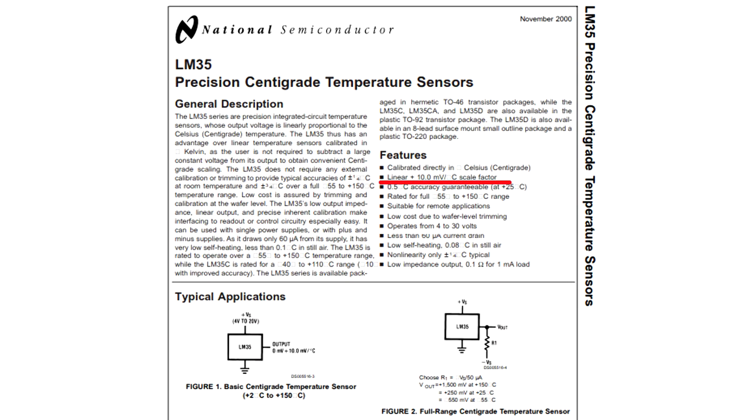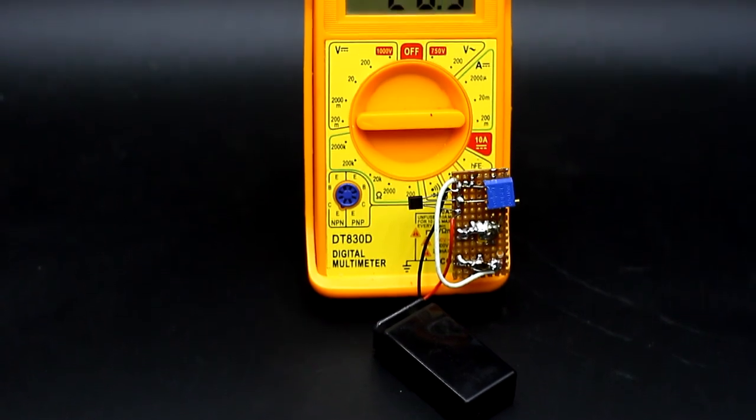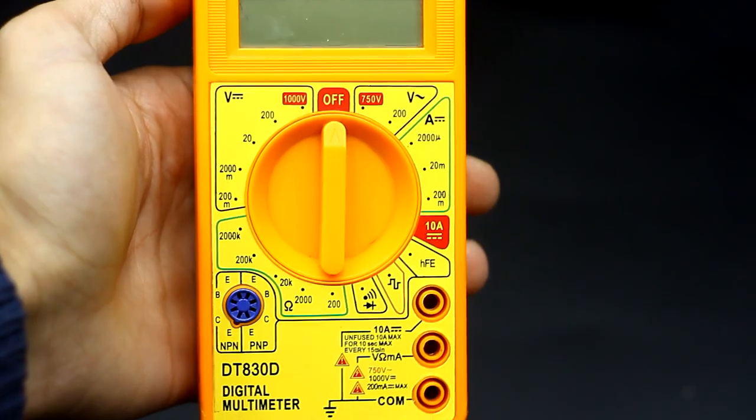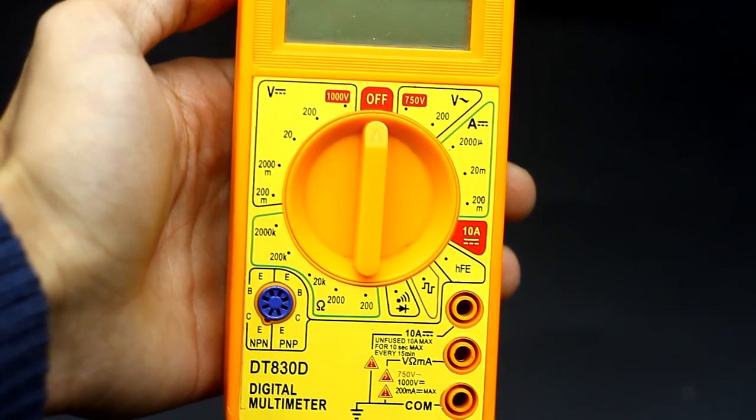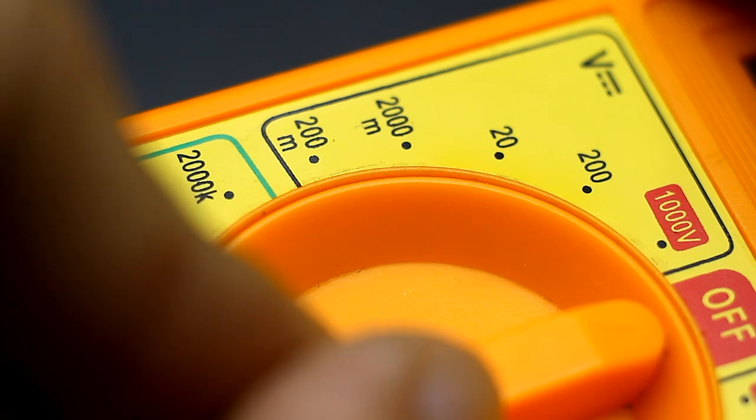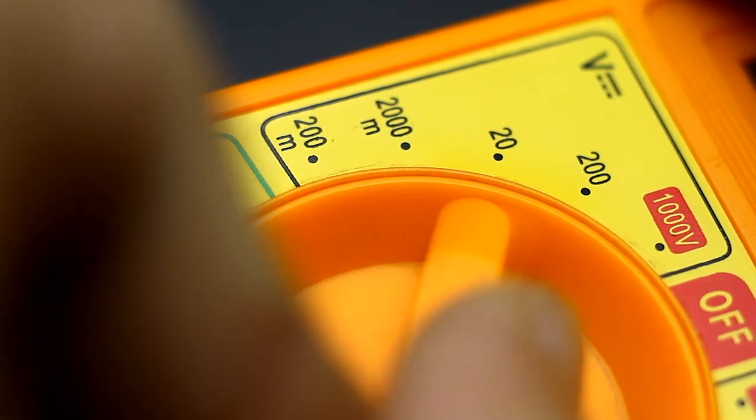The output voltage of the microcircuit changes by 10 millivolt with every 1 degree Celsius. That is, in such connection 200 millivolt at the output will mean that the ambient temperature is 20 degrees. Even a simple, cheap multimeter has measuring ranges of 200 and 2000 millivolt. Both modes are perfect for our purposes.